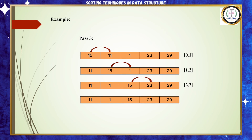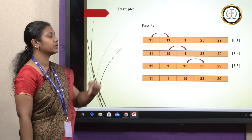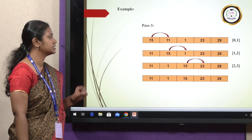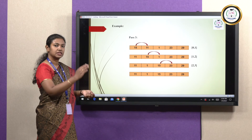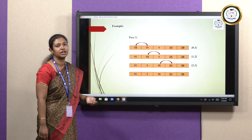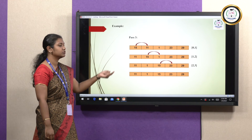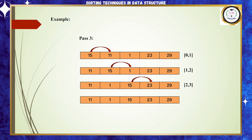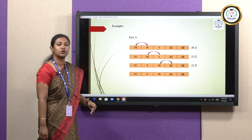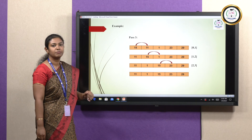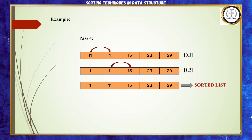It is still not in sorted order, so we move on to pass 3. Pass 3 starts with 15, 11, 1, 23 and 29. Comparing the first two elements — 15 and 11 — since 11 is smaller than 15, they are swapped. Then the second and third elements, 15 and 1, are compared; since 1 is smaller than 15, they are swapped. The third and fourth elements, 15 and 23, are compared and since 15 is smaller, they remain. The last two elements, 23 and 29, are already sorted and are ignored.